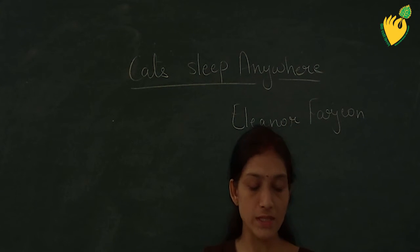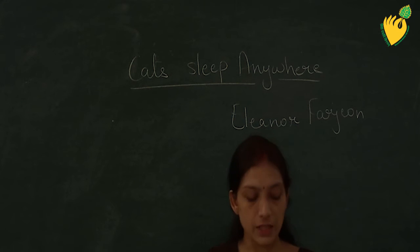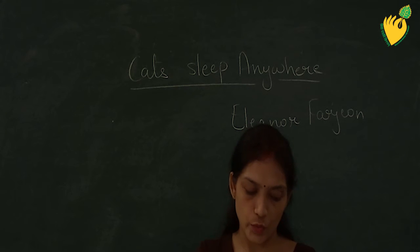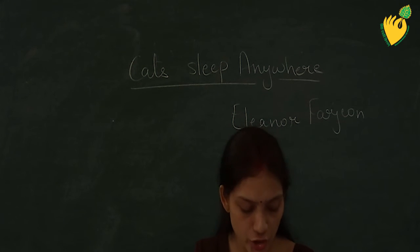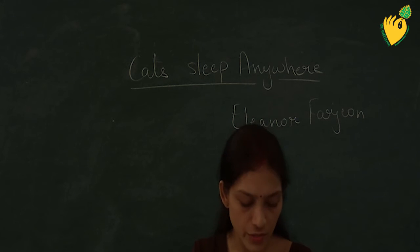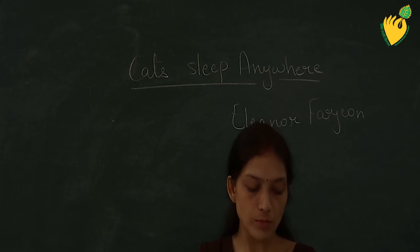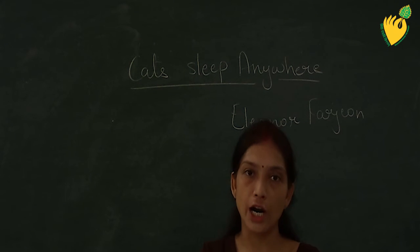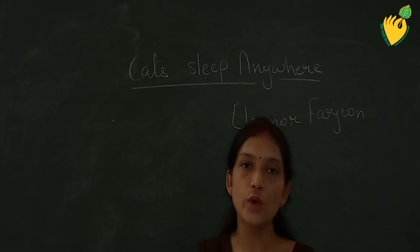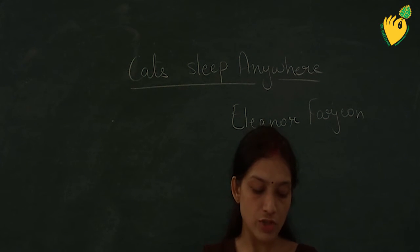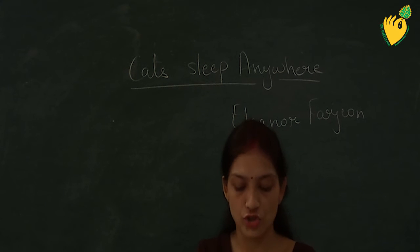Once again I will recite this poem and you will repeat after me. Cats sleep anywhere. Any table, any chair. Top of piano, window ledge, in the middle, on the edge. Open drawer, empty shoe. Anybody's lap will do. Fit it in a cardboard box, in the cupboard with your frogs. Anywhere they don't care. Cats sleep anywhere. This poem is written by Eleanor Farjeon.